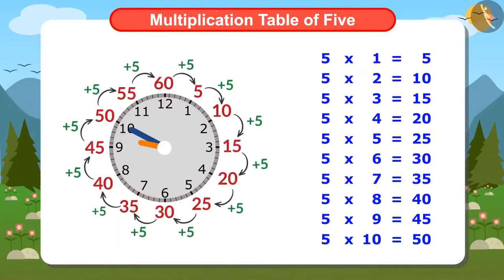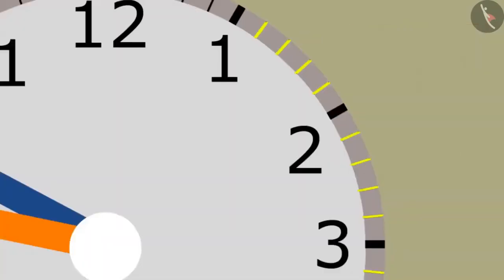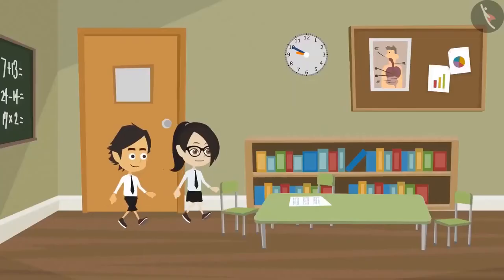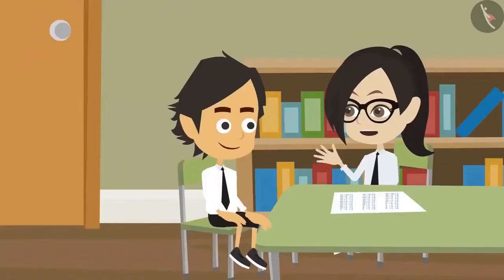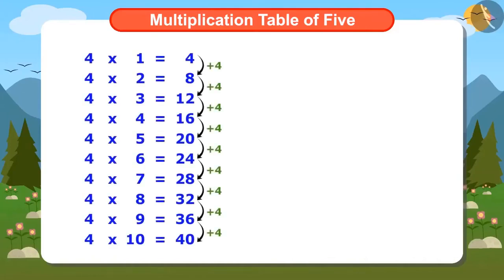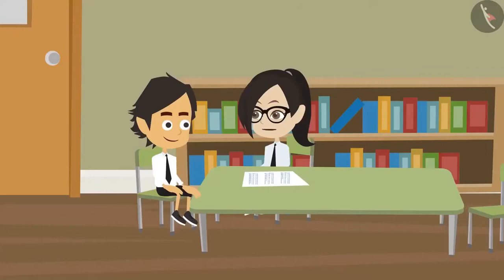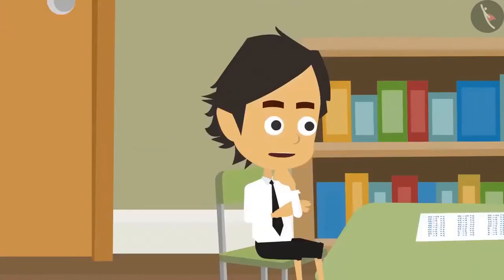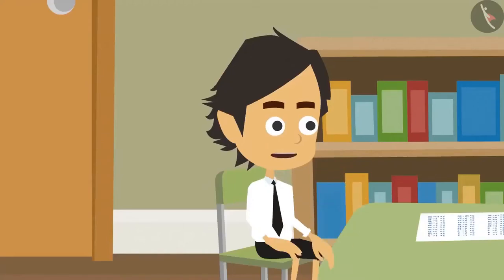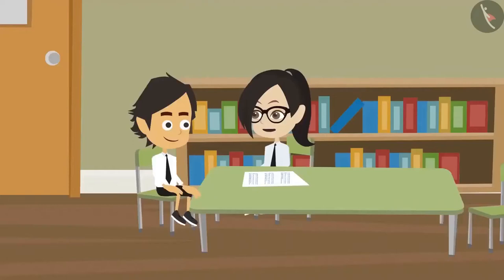Now you can also use the multiplication table of 5 to read the minutes. You do not have to count the minutes one by one. But how did you write the multiplication table of 5? The multiplication table of 4 is written by adding 4 repeatedly. In the same way, the multiplication table of 5 is written by adding 5 repeatedly. But I use the multiplication tables of 2 and 3 to write the table of 5. Let me show you how to write the multiplication table of 5 using tables of 2 and 3.